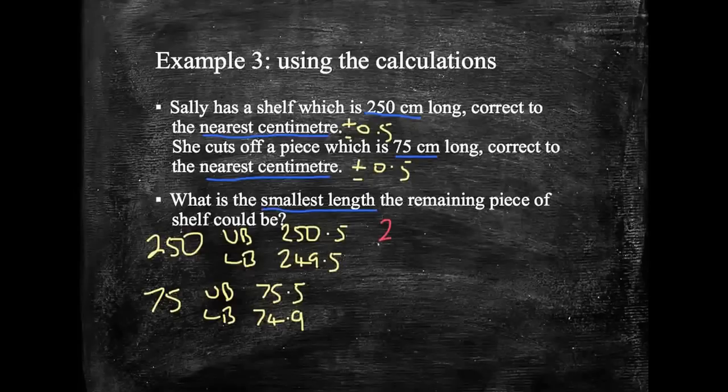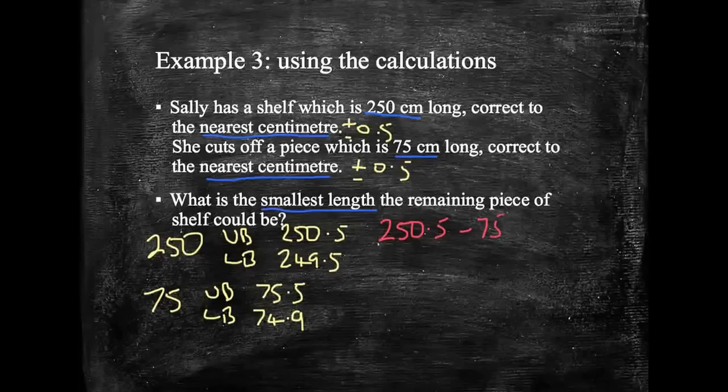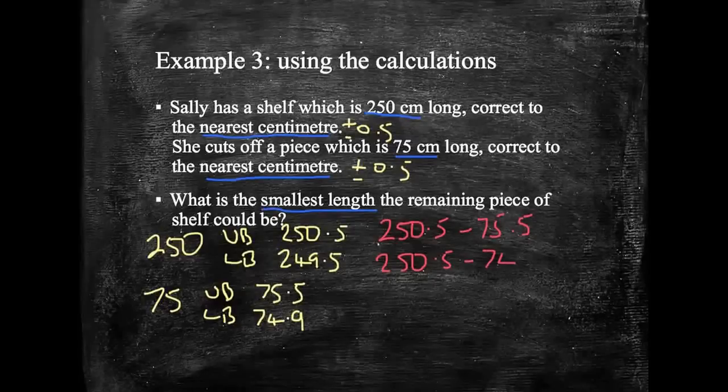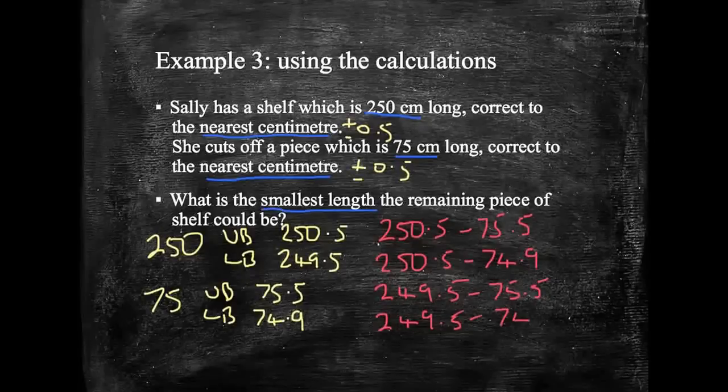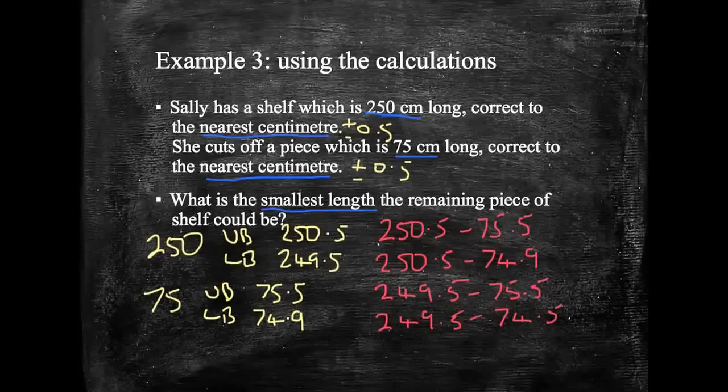So why don't we do 250.5 take away 75.5. We could also do 250.5 take away 74.9. We could do 249.5 take away 75.5, and we could do 249.5 take away 74.5. I've just noticed I've made a mistake over here. Okay, I'm just going to rub this out. I apologize. That should obviously be 74.5 down there.